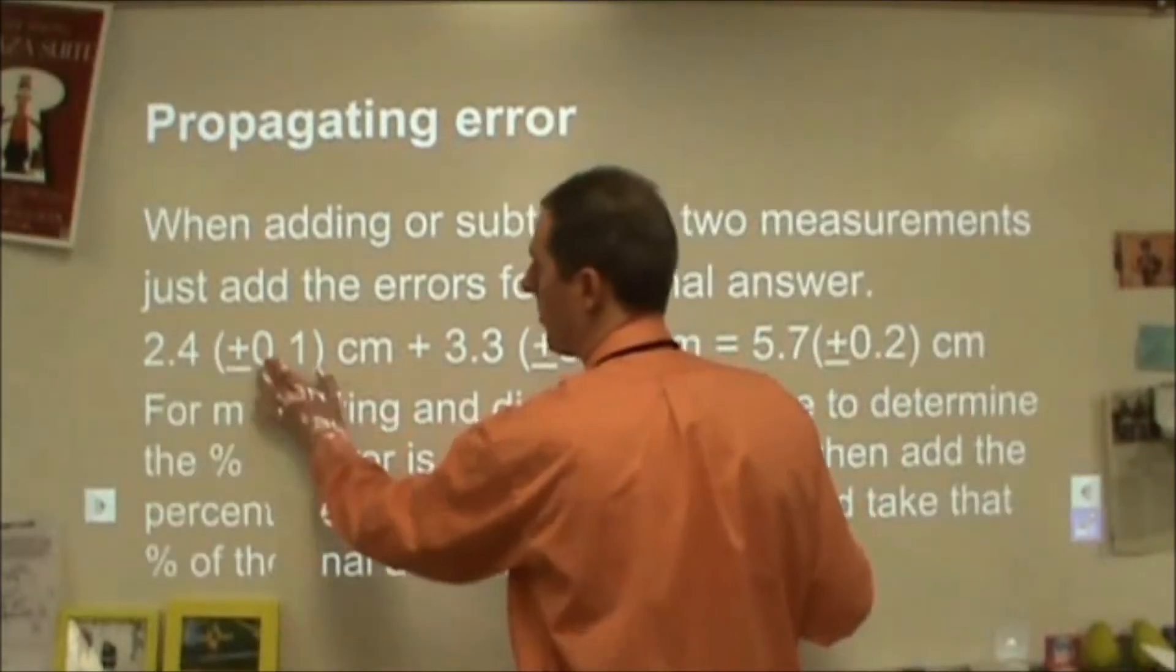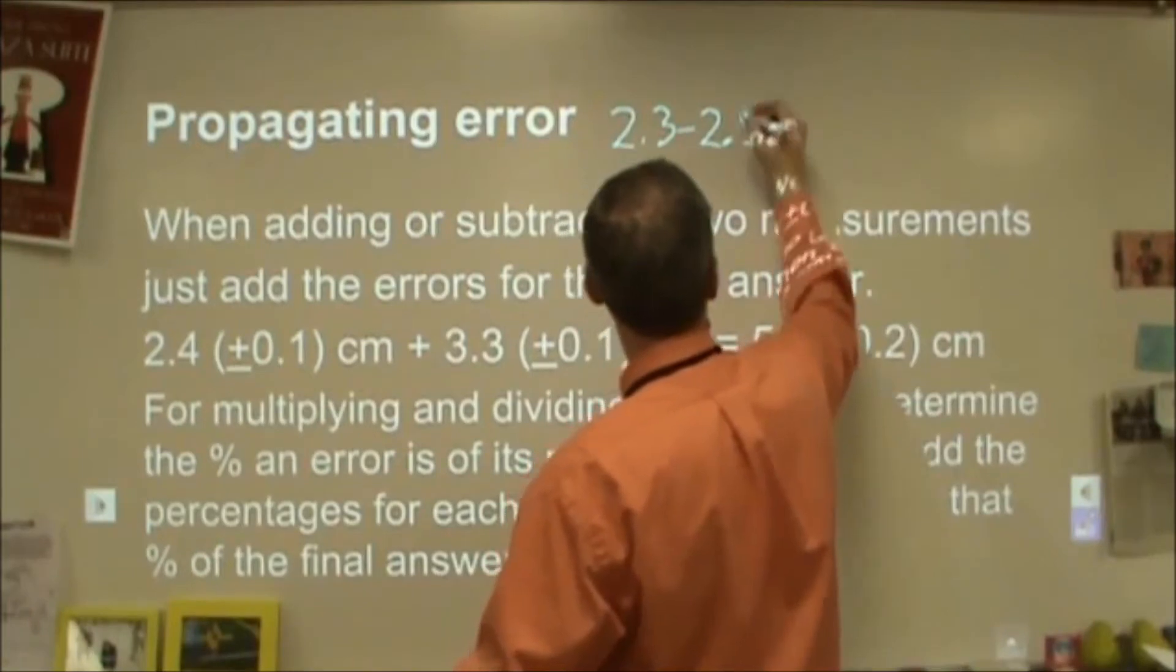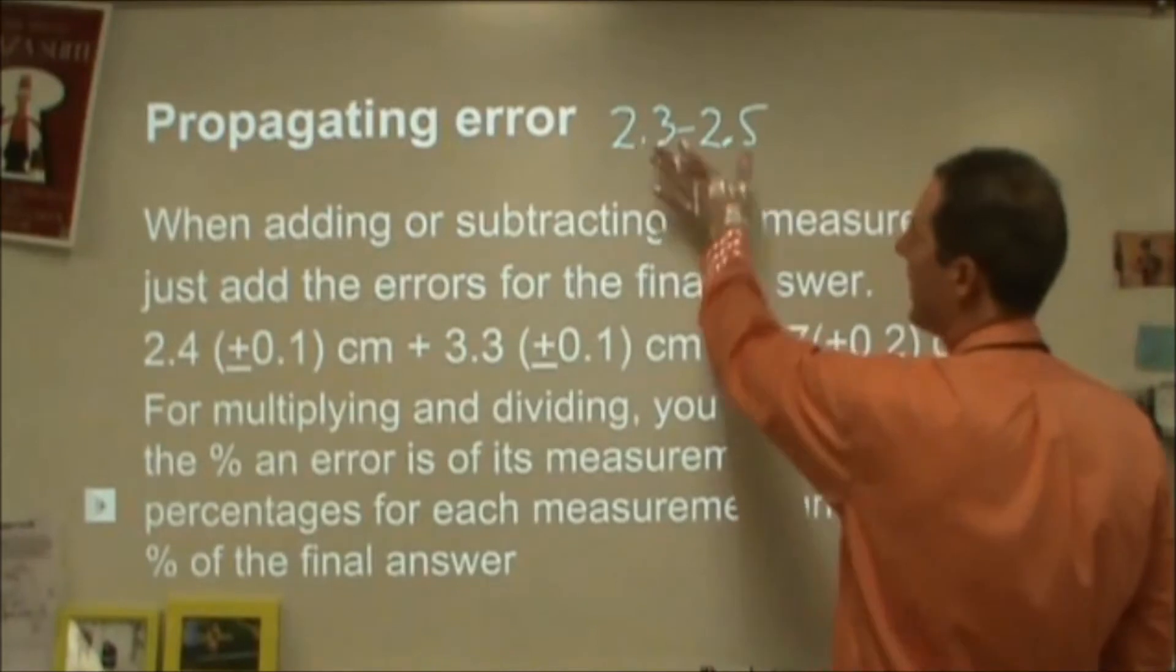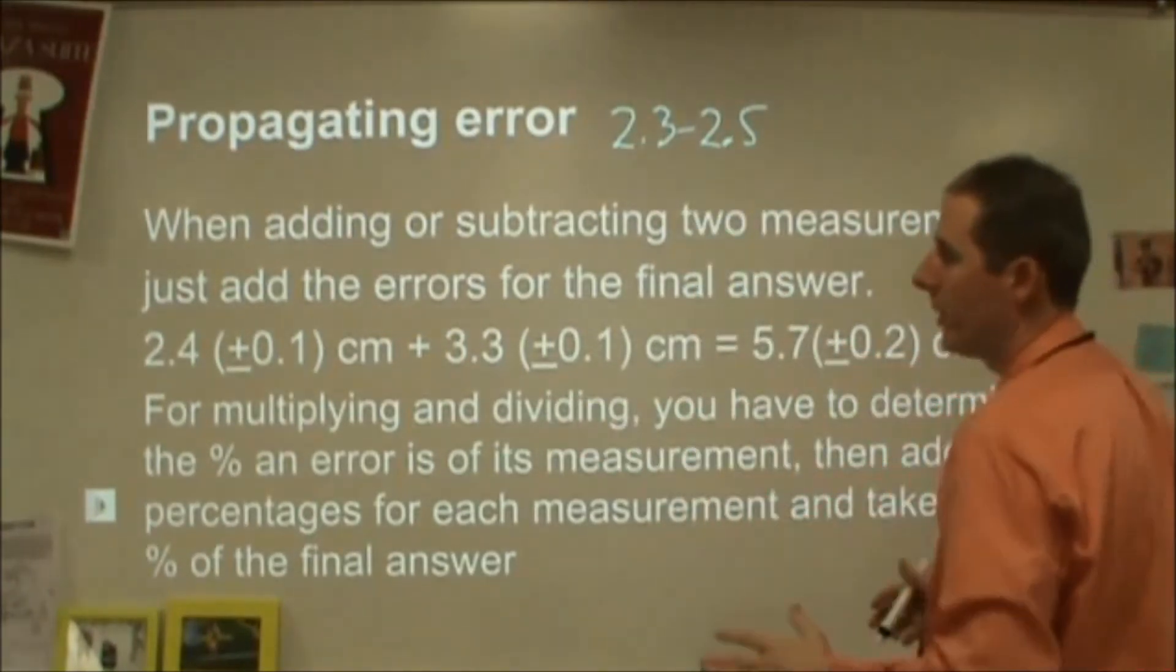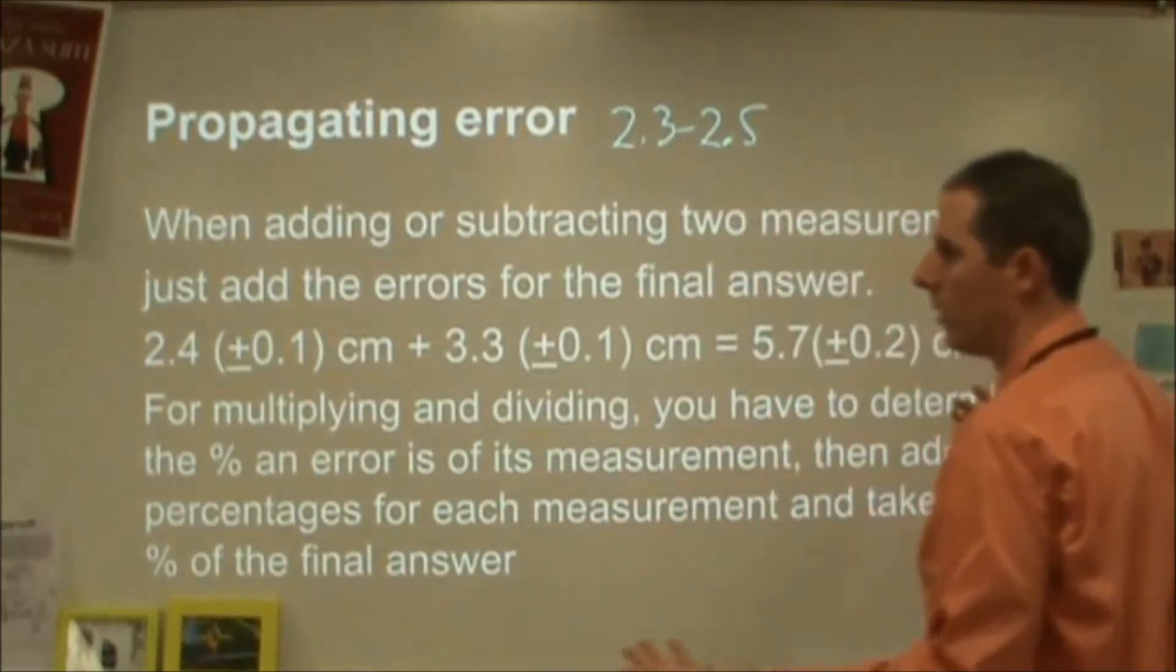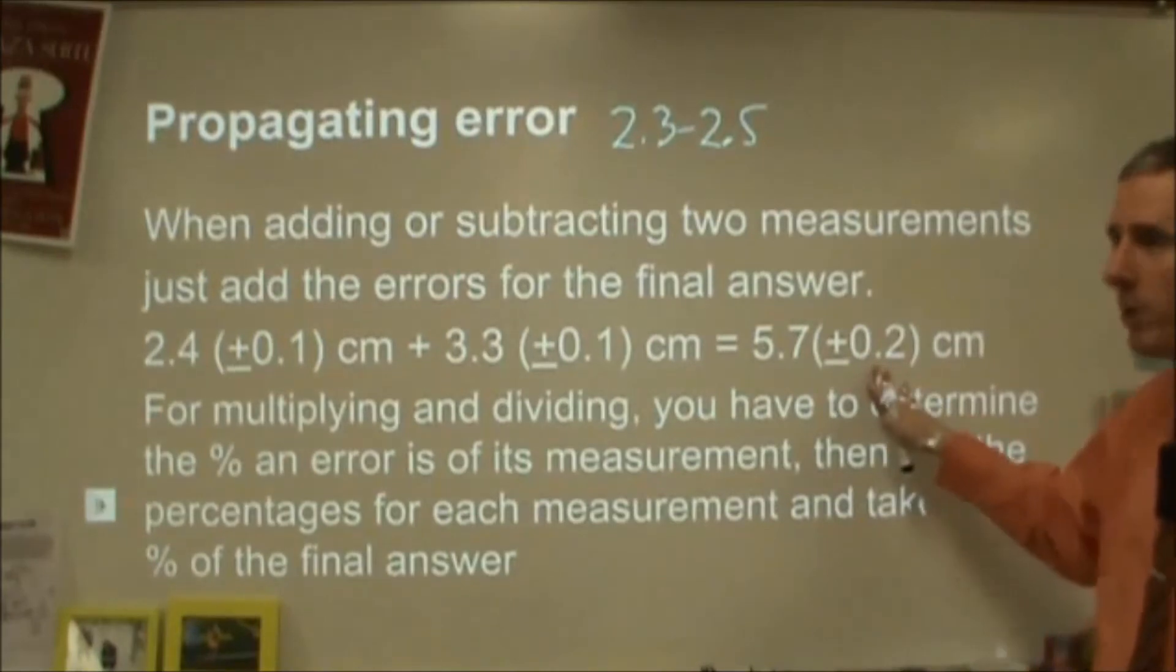So this 2.4 (±0.1) really means that my answer is somewhere between 2.3 and 2.5 probably. And so what I want to do is keep that honest with respect to my calculation. The way you do that is you just combine the two errors. So if this can be off by 0.1 and this can be off by 0.1, then the answer can be off by 0.2.